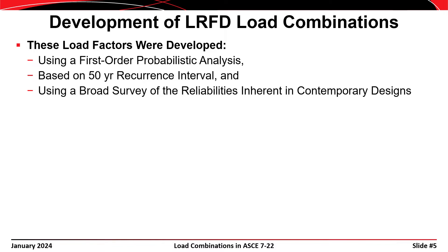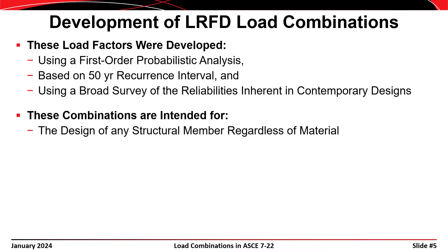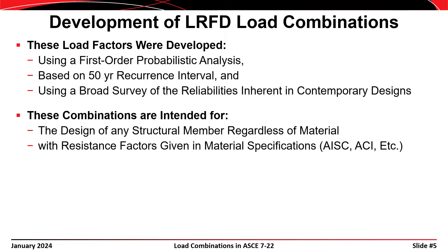The load factors in these combinations were developed using a first-order probability analysis based on a 50-year recurrence interval, and they're calculated using a broad survey of reliabilities that were inherent in contemporary designs at the time of their development. The developers looked at buildings currently in service and calibrated the load factors to get approximately the same level of reliability in newer structures. These combinations are intended for the design of any structural member regardless of material, and they're intended to be used with resistance factors given in material-specific design specifications — such as ACI for concrete or AISC for steel.